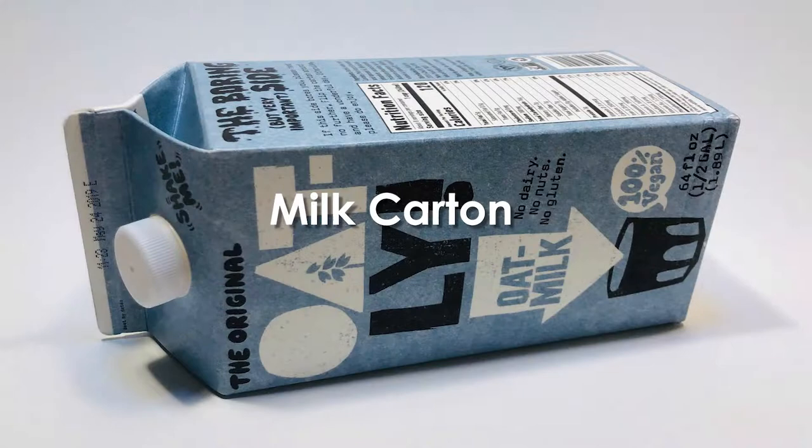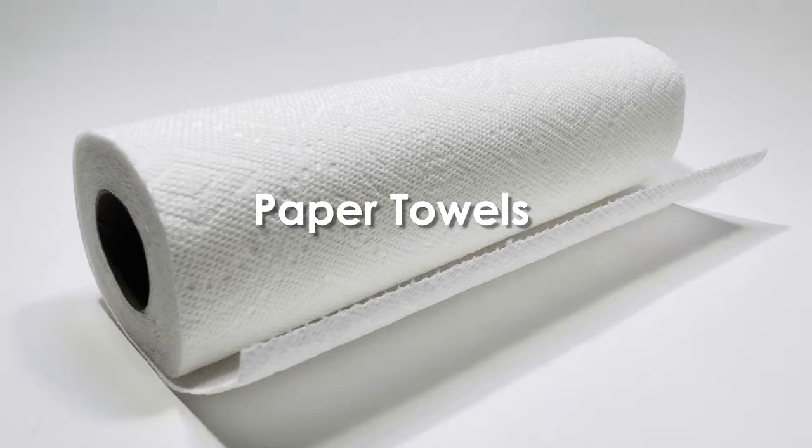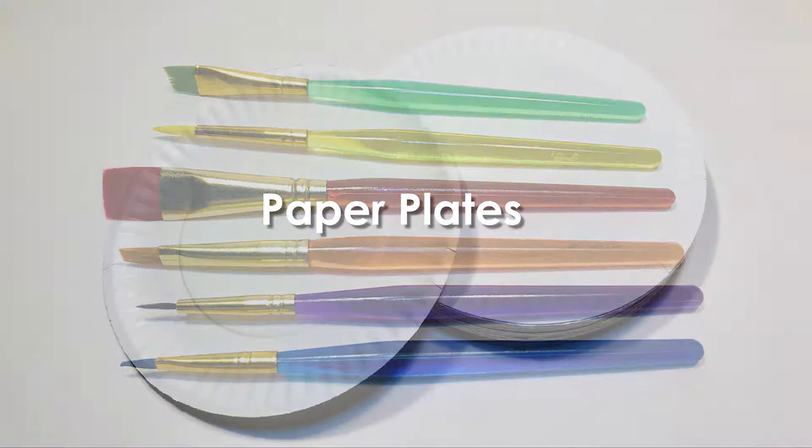We'll need a milk carton, triangle, fine tip permanent marker, circle template, craft knife, paper towels, paint, paint brushes, paper plates, popsicle sticks, cotton cord, scissors, pliers, googly eyes, and glue.